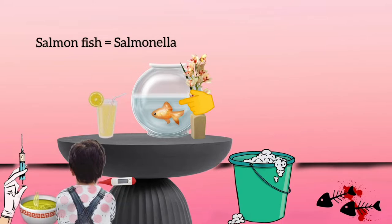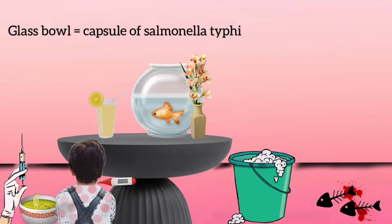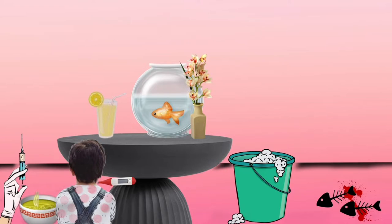The salmon is present inside a glass bowl. The glass bowl represents a capsule, so Salmonella typhi has a capsule having Vi antigen. Like the salmon fish which can swim and move, Salmonella is also motile.